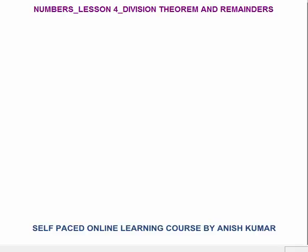Division Theorem is a very fundamental concept in number. For example, if you want to divide 37 by 7: 7 times 5 is 35, the remainder is 2.